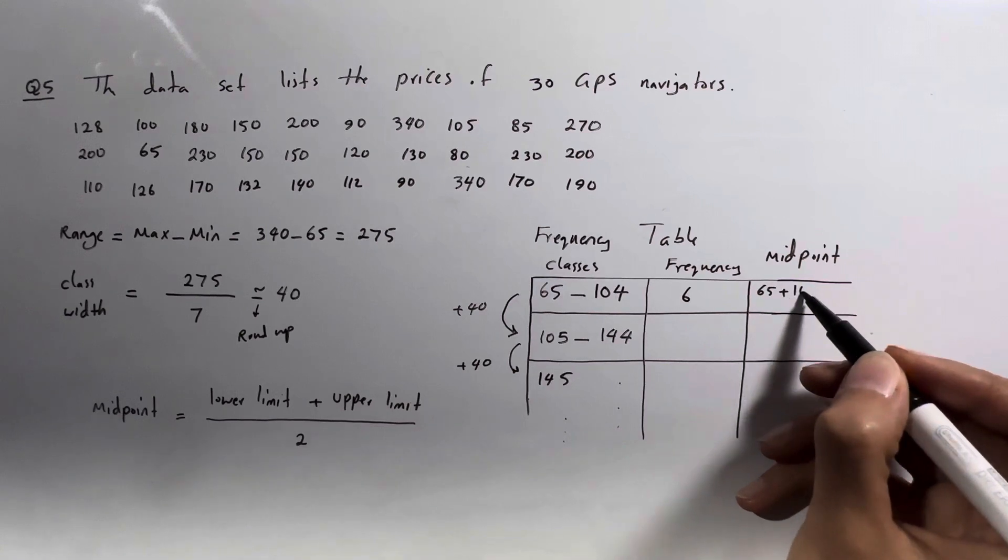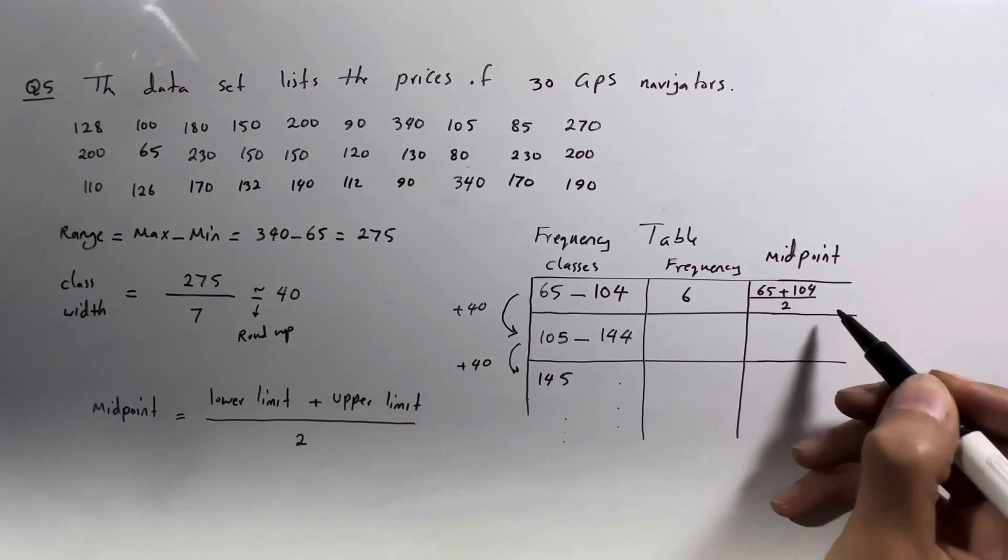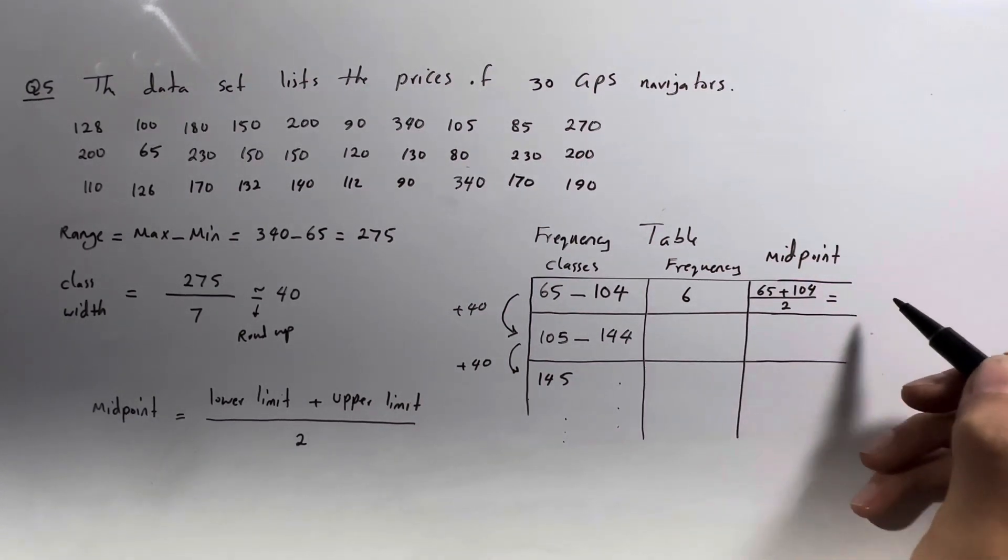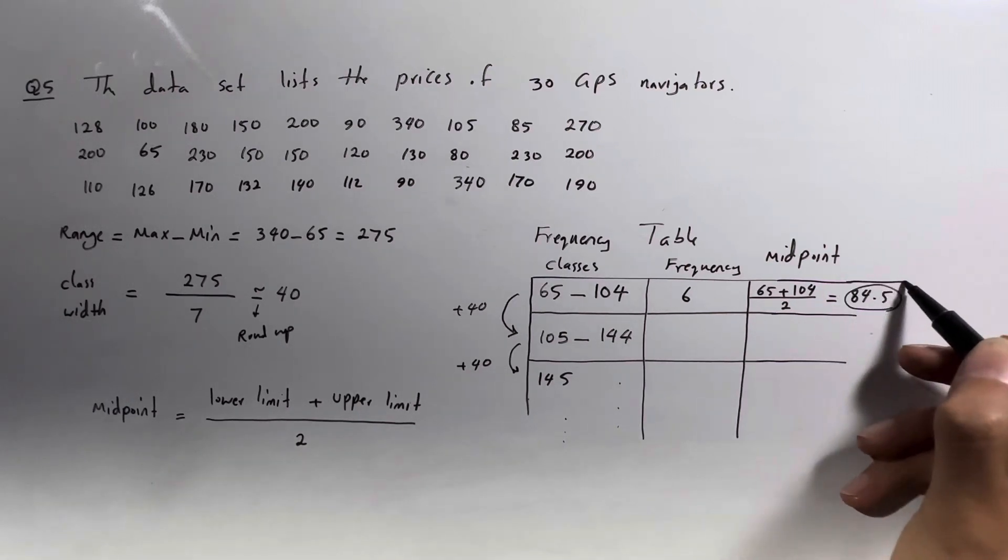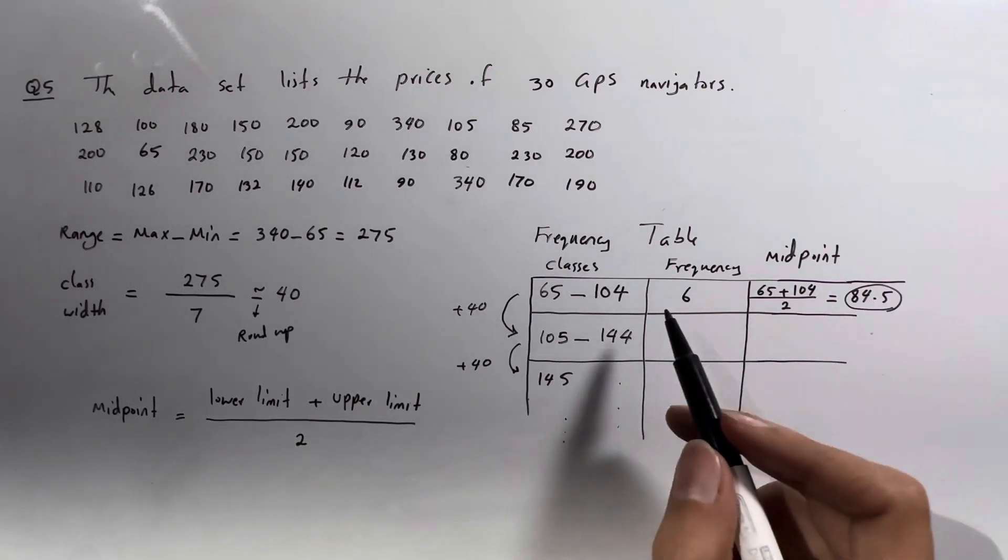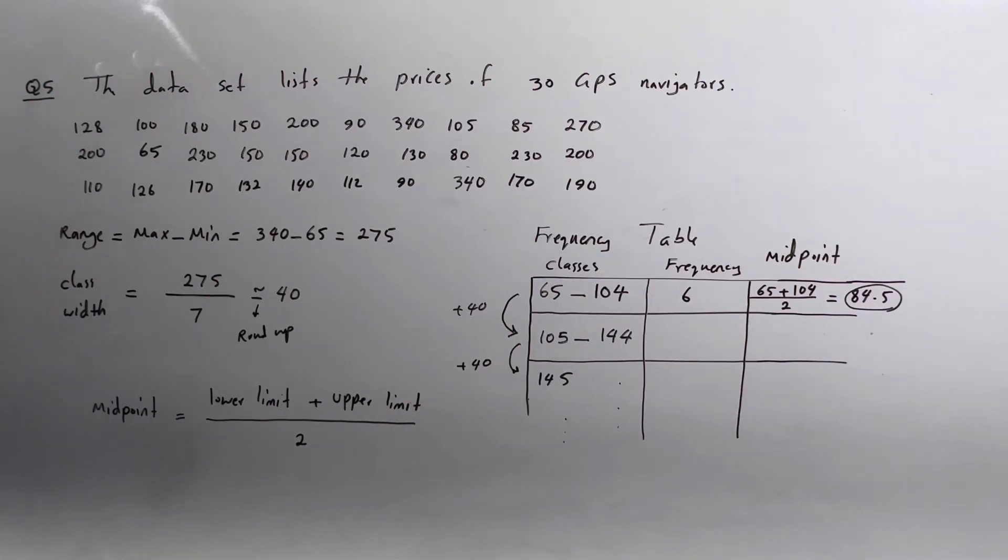We're going to add 65 to 104 and then divide it by two. If you do that, you get 84.5. This is the midpoint or the representative of the first class.